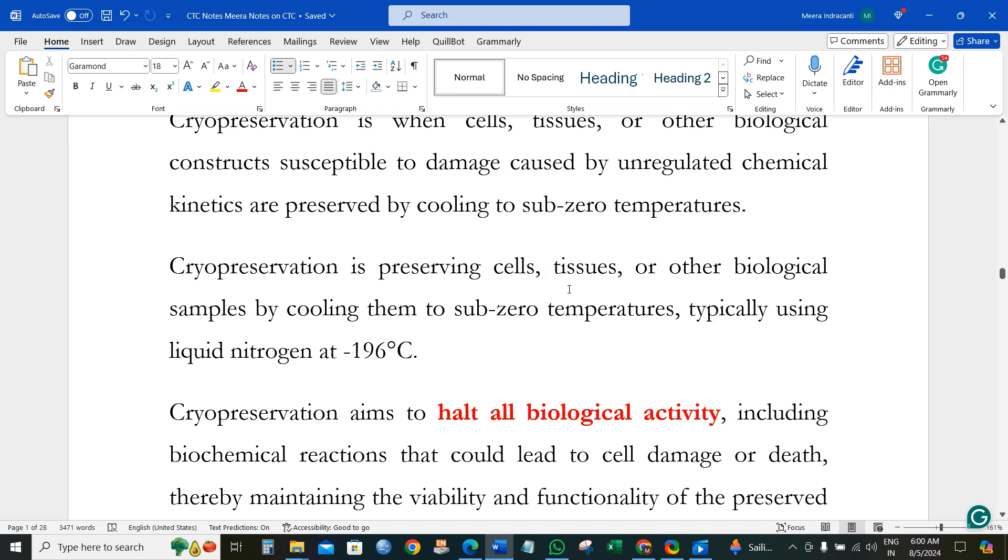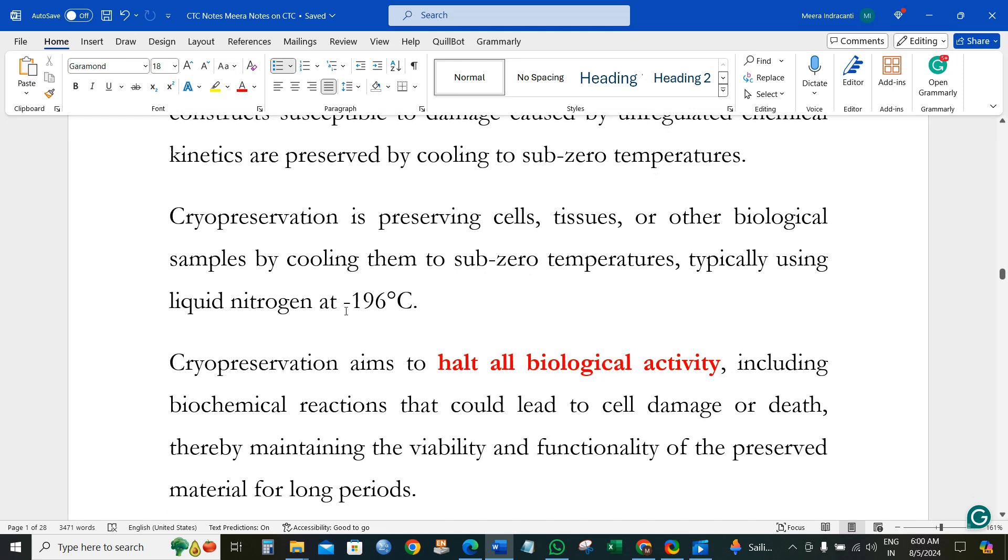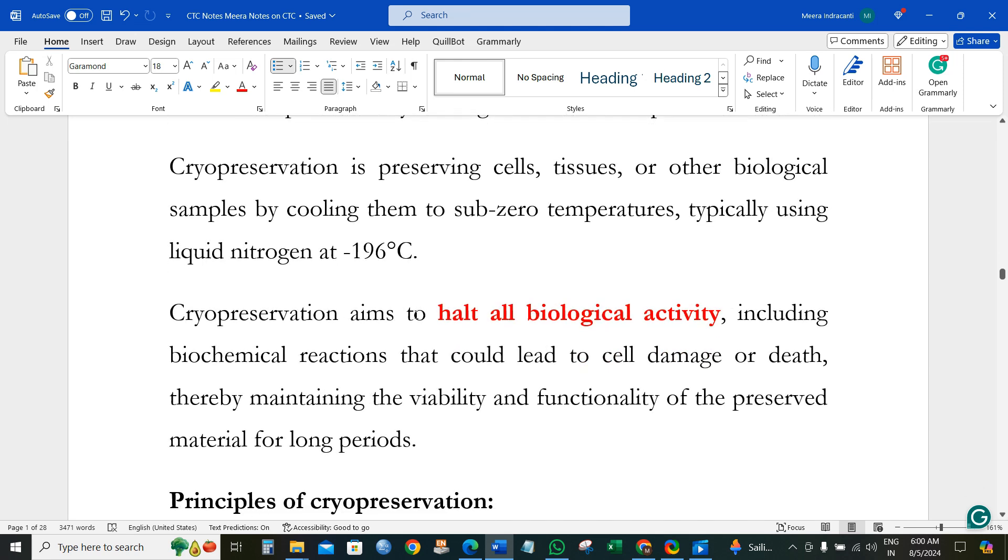Cryopreservation is preserving cells, tissues, or other biological samples by cooling to sub-zero temperatures, below zero degrees centigrade. Usually we use liquid nitrogen as the medium, which provides minus 196 degrees centigrade.